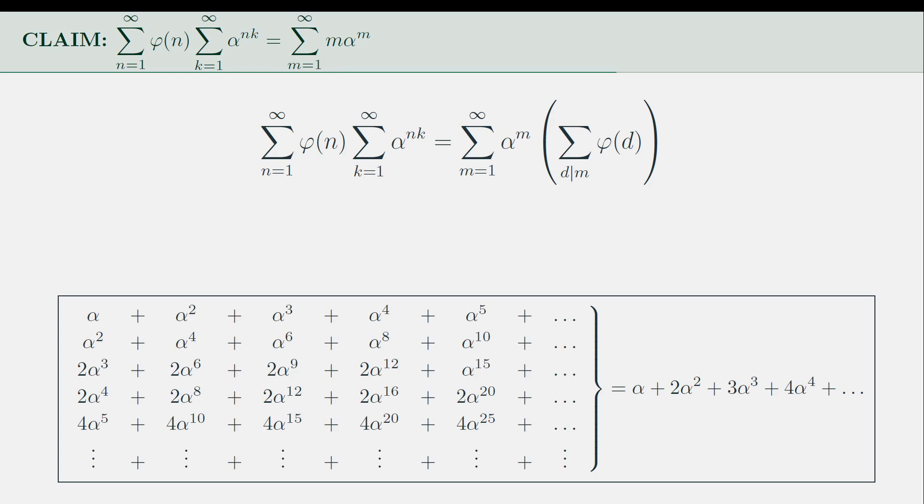In essence, we have switched the order of summation by changing our perspective. And then, as I mentioned a while ago, we will make use of the theorem that the sum of the totients of the divisors of m is equal to m.